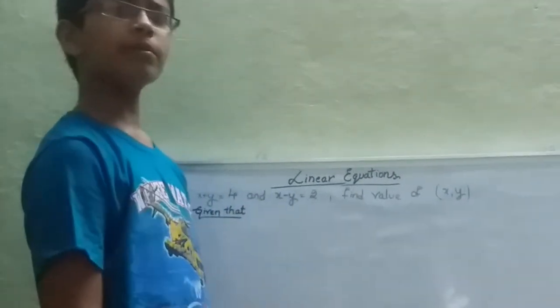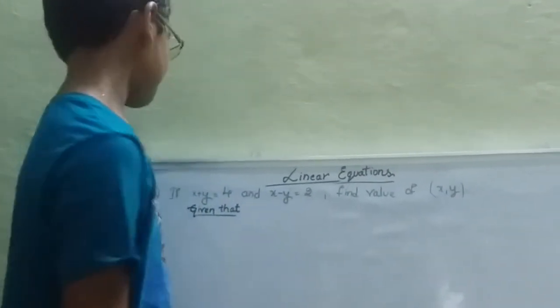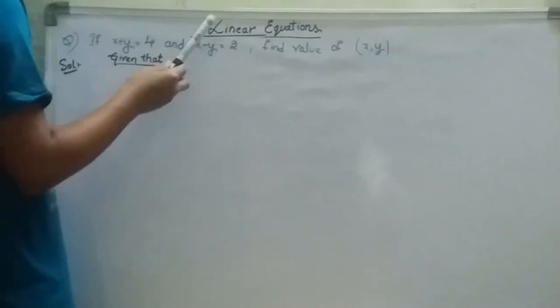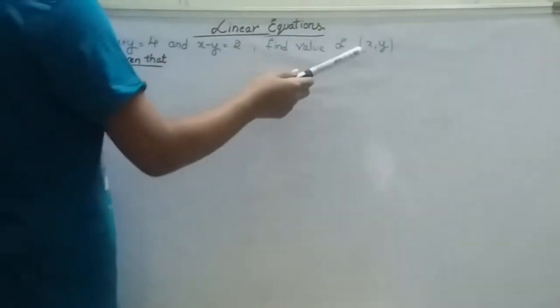Today I'm going to tell you about a problem based on linear equations. X plus Y is equal to 4 and X minus Y is equal to 2. Find the value of (X, Y).